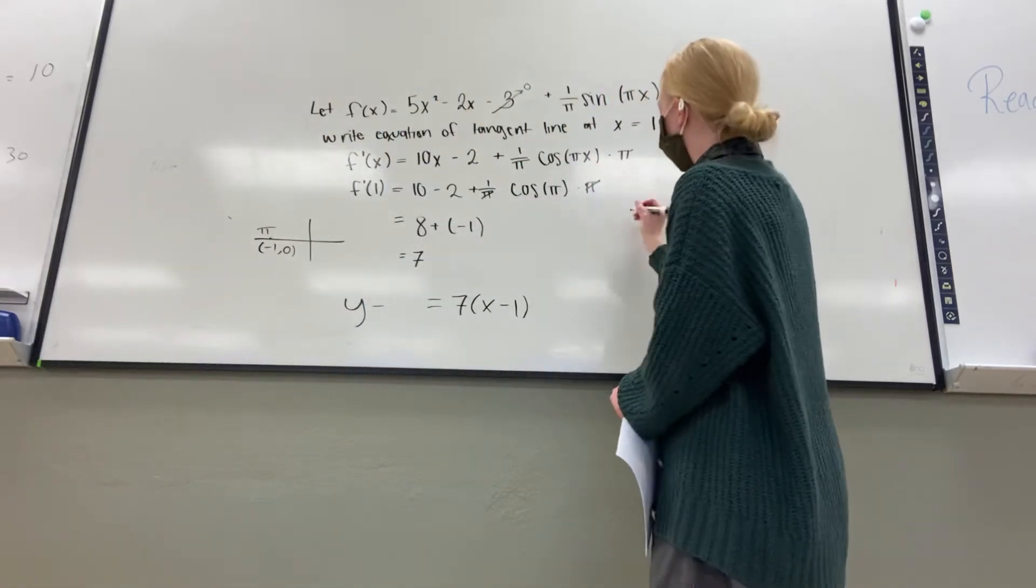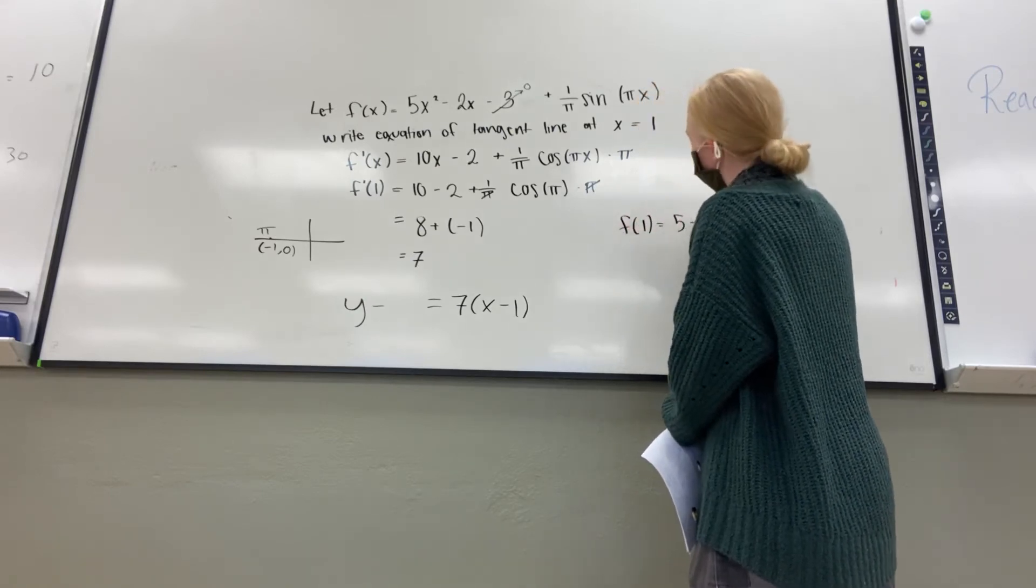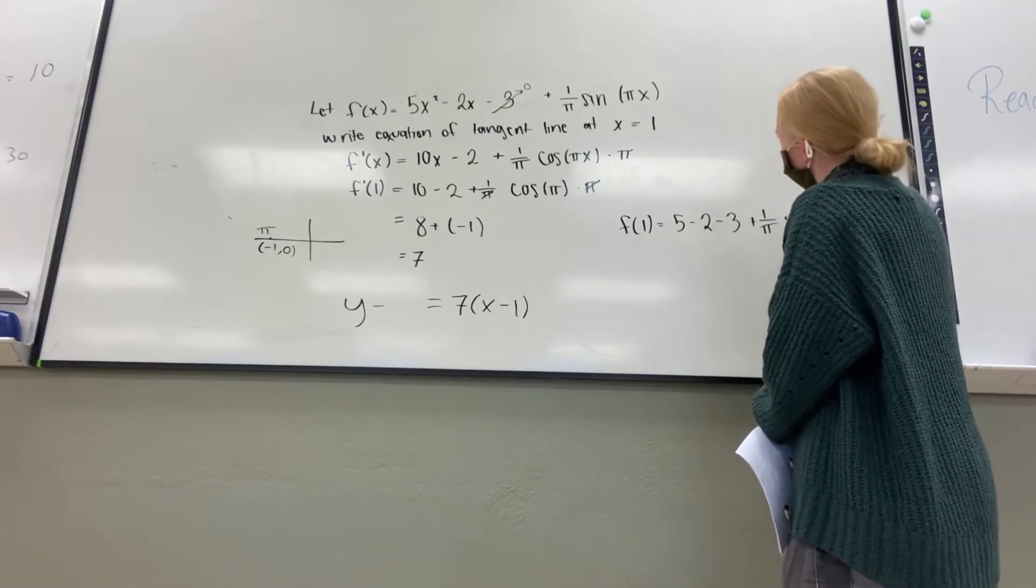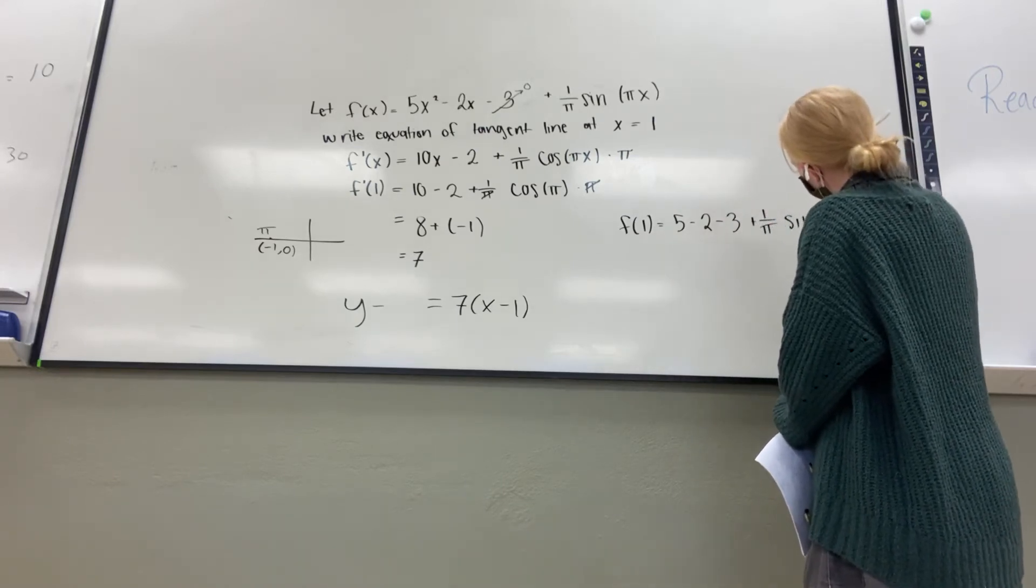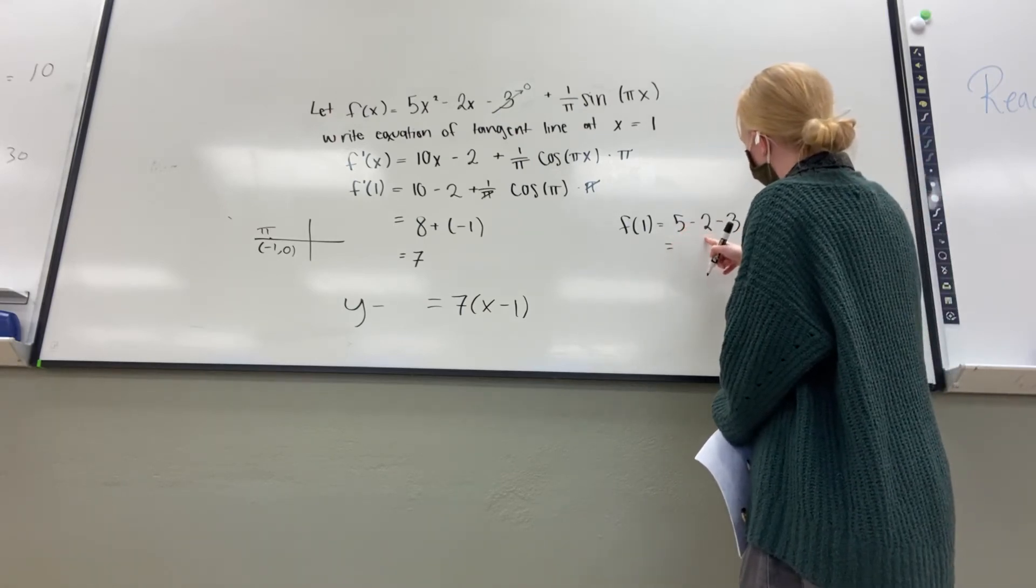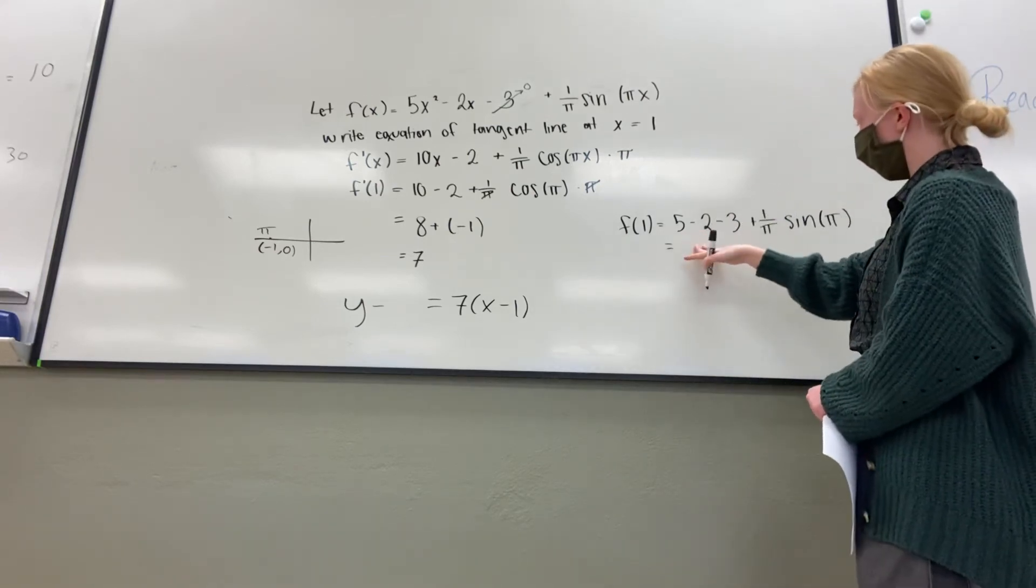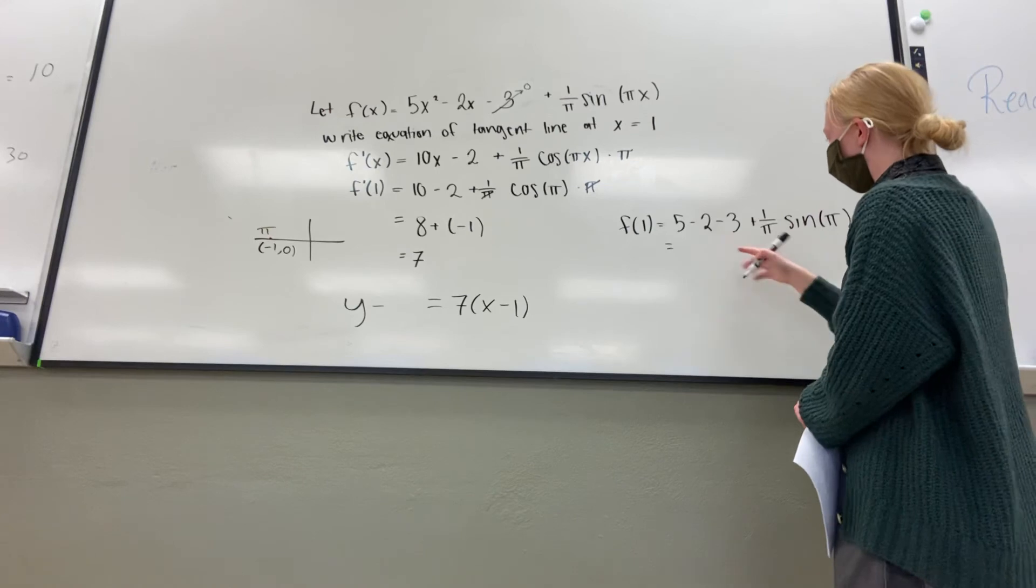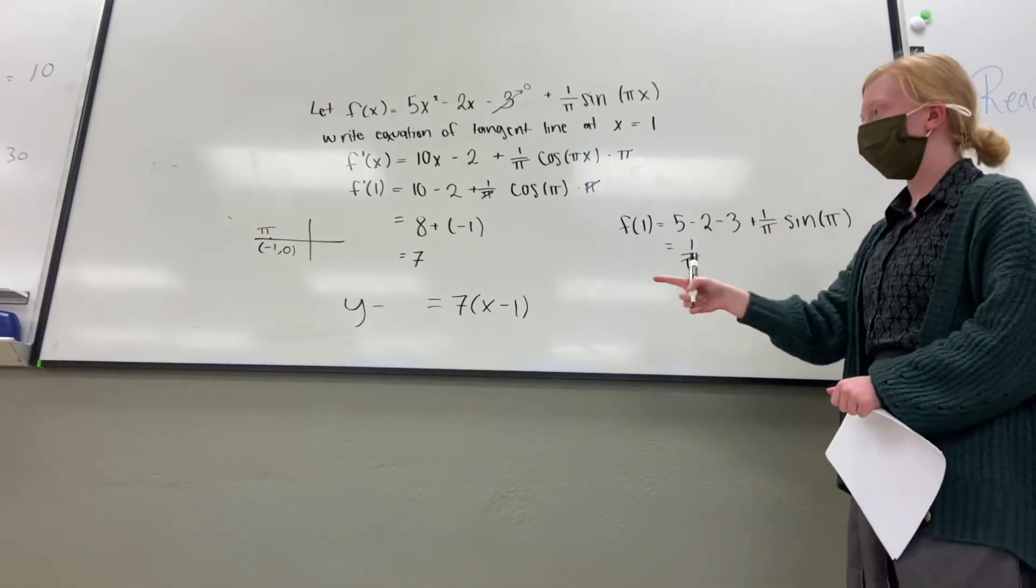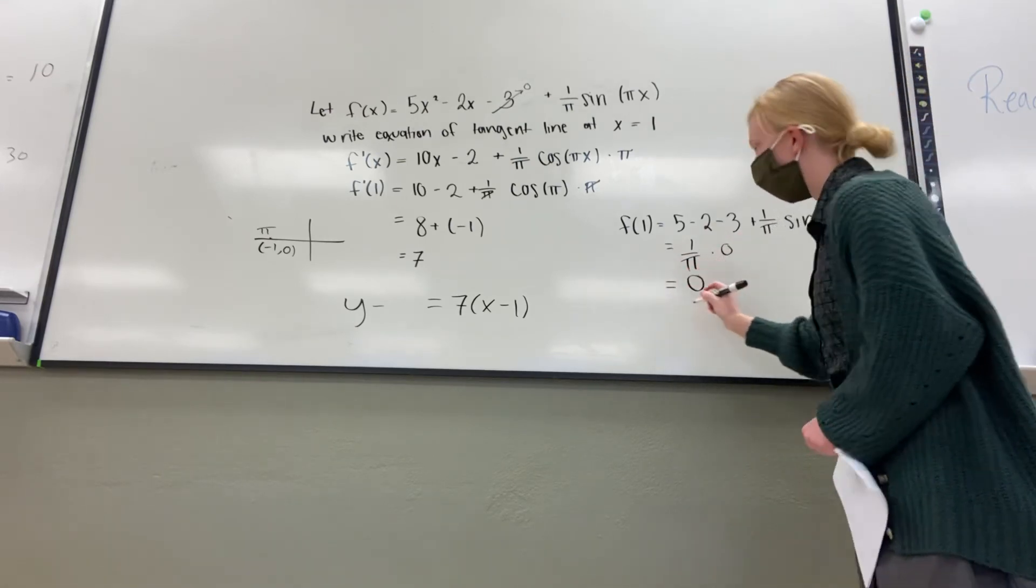We plug in 1 to f of x, so f of 1. So 5 minus 2 is 3, minus 3 is 0, so we just get rid of that, and then we have 1 over pi times sine of pi. Sine of pi is 0, so times 0, so your y-value is 0.